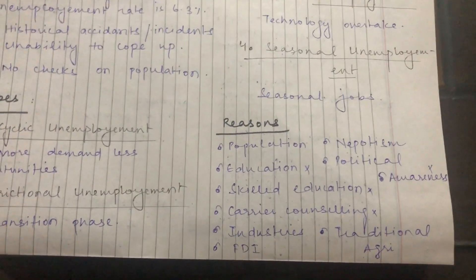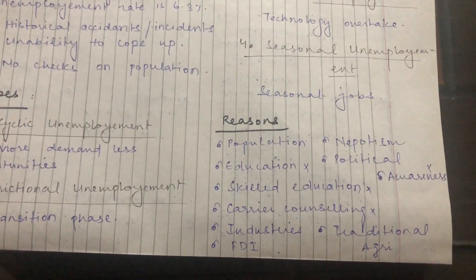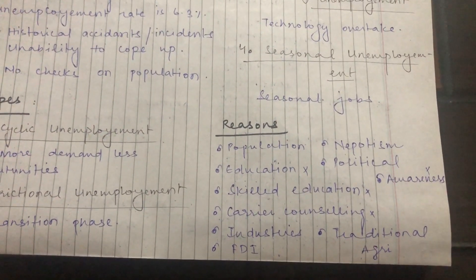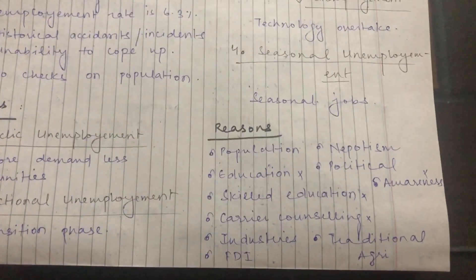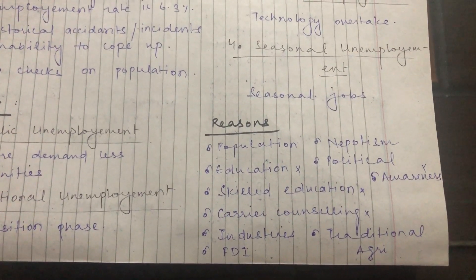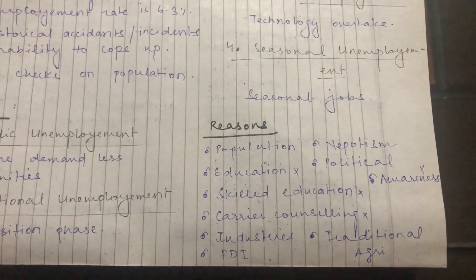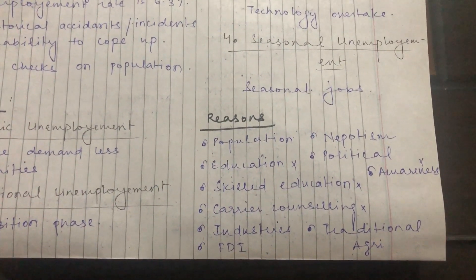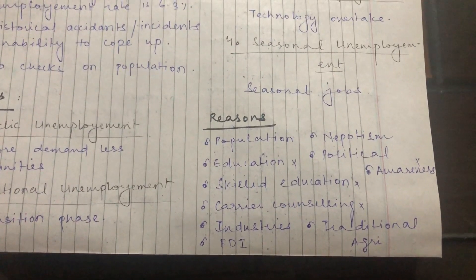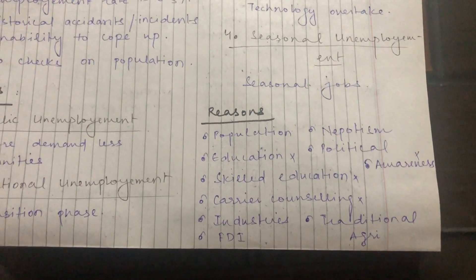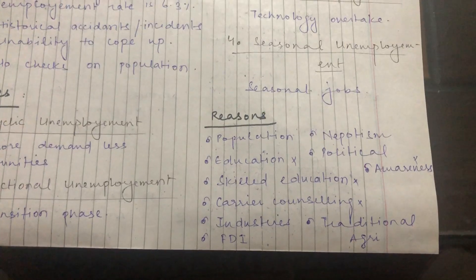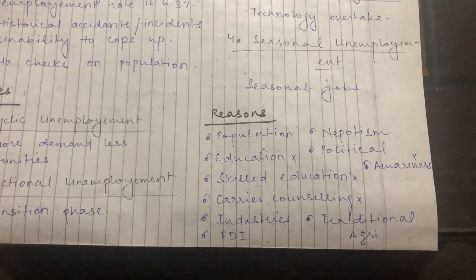There are many reasons for unemployment, though some basic ones include: uncontrolled population, as there are more people than available opportunities; lack of education and career counseling, which is almost negligible in Pakistan; and the decline of local industries, as production costs are high and local industries are struggling.